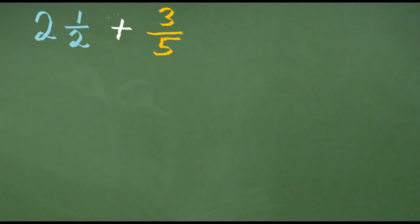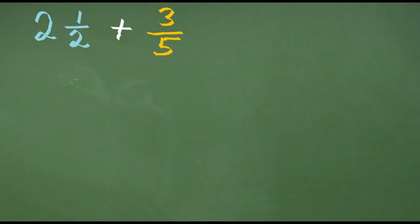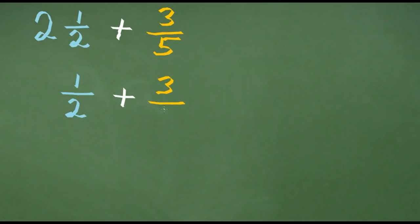When we're adding simple fractions, we just look at the fraction part, because we don't have the whole number there. But here we've got the two as well, and the technique is very similar to adding simple fractions. What you need to do is, to begin with, just ignore the two whole numbers and simply add the simple fractions together — one-half plus three-fifths. We'll come back and pick up our two, our whole number, once we've done this part of the calculation.